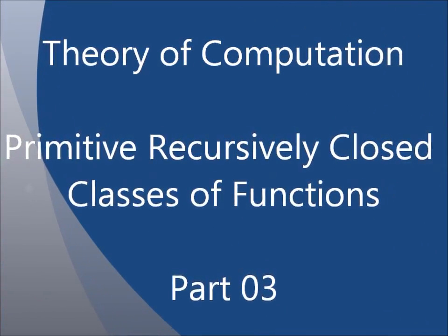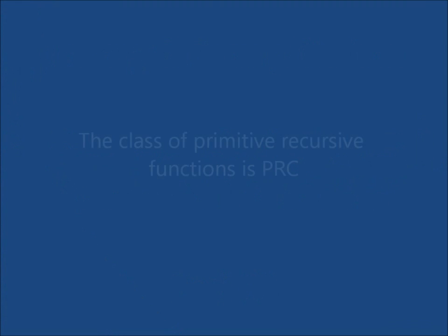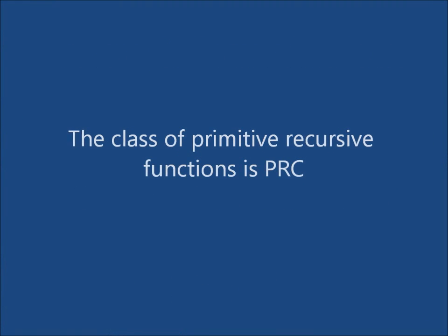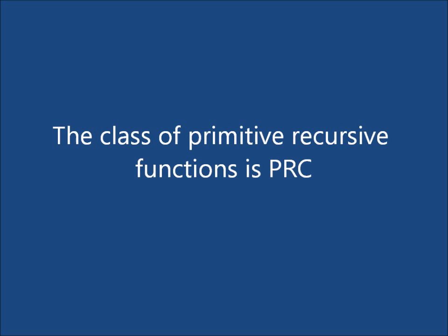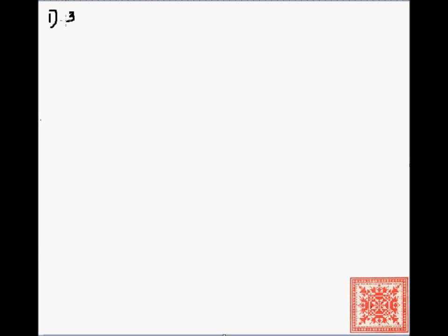Let's continue our discussion of primitive recursively closed classes of functions. We're going to prove a few things. The first thing — the first theorem, rather corollary — is that the class of primitive recursive functions is primitive recursively closed.